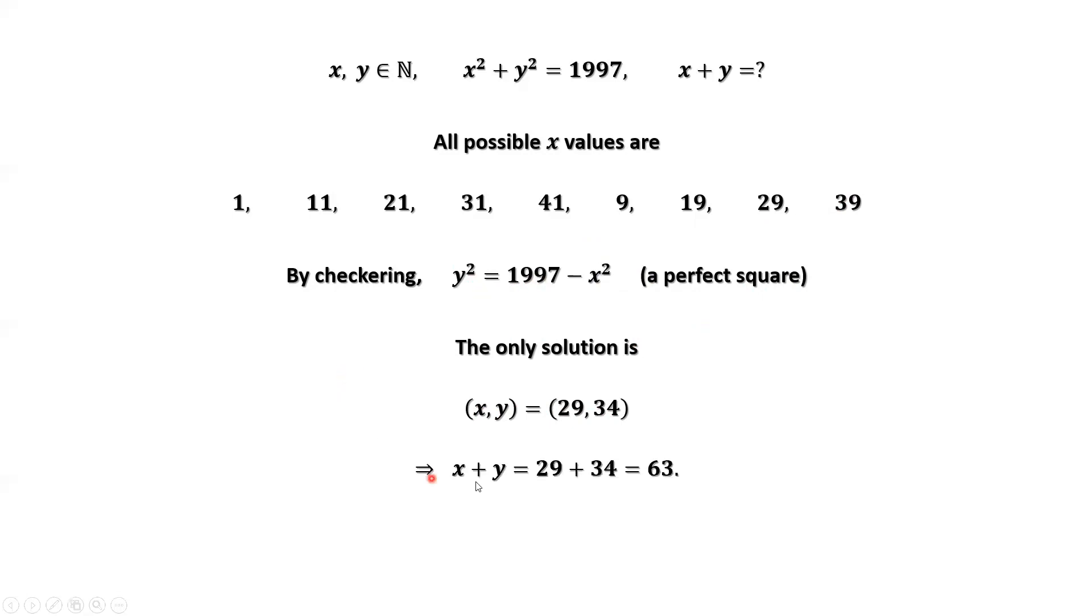Therefore, x plus y equals 29 plus 34, which is 63. 63 is the final answer. That's all. Thanks for watching and I'll see you next time.